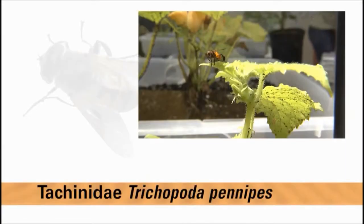The fly family Tachinidae includes important parasitoids of several vegetable crop pests. The squash bug is attacked by the feather-legged fly, Trichopota penipes. Adult female parasitoids spend much of their time looking for host insects to provide food for their offspring.